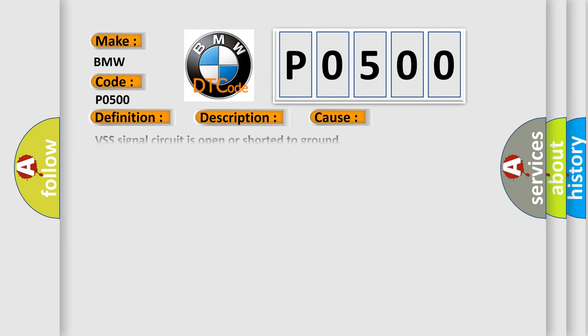This diagnostic error occurs most often in these cases: VSS signal circuit is open or shorted to ground, VSS harness circuit is shorted to ground, VSS harness circuit is shorted to power, VSS circuit open between the DME and related control module, VSS or wheel speed sensors circuits are damaged.